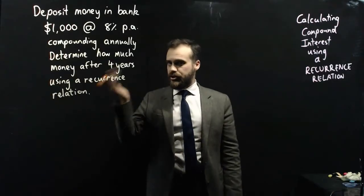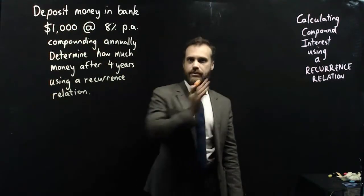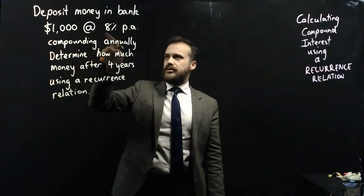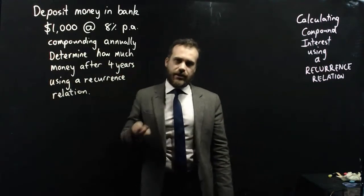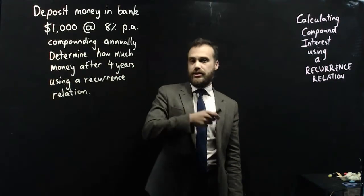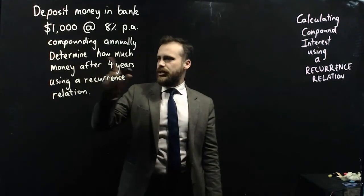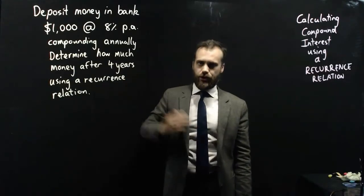Here's the question I'm going to solve. We're going to deposit money in the bank at $1,000 at 8% per annum compounding annually. That means the bank is paying us 8% of our deposit at the end of every year. Determine how much money after four years using a recurrence relation.